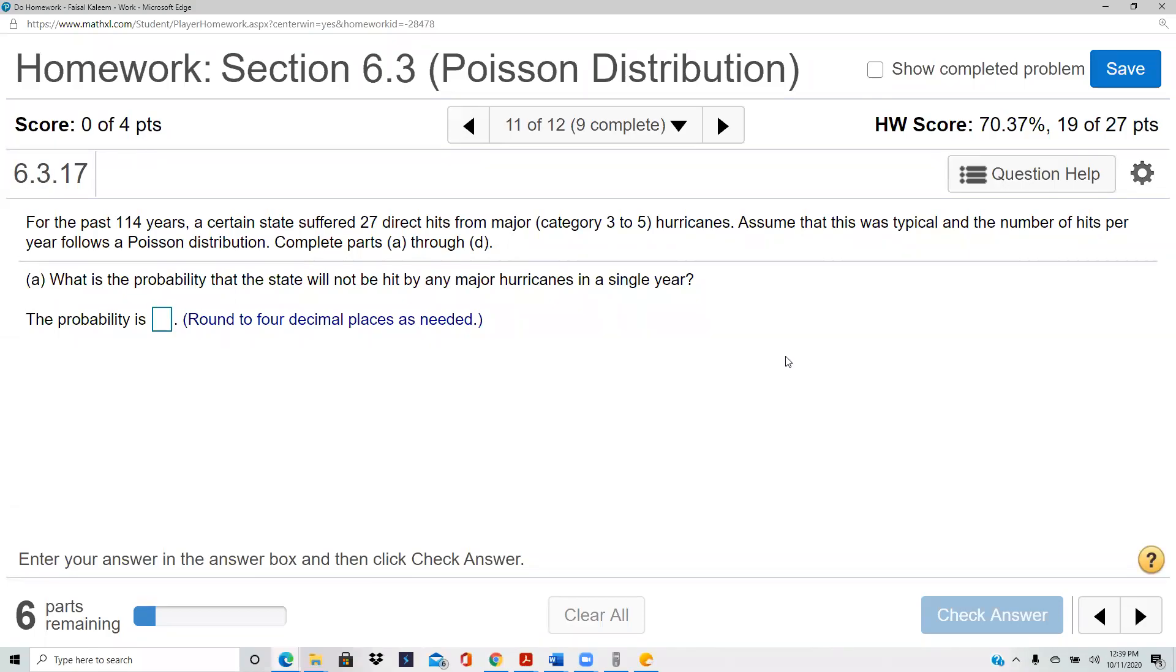For the past 114 years, a state suffered 27 direct hits from hurricanes. Assume that it was typical and the number of hits per year follows a Poisson distribution. What's the probability that the state will not be hit by any major hurricanes in a single year? This is a situation where they have given us the average of 114 years, but then they ask a question about one year. So we have to first change it into a one-year average.